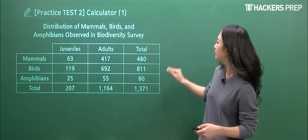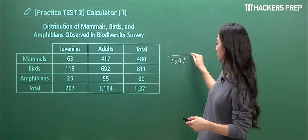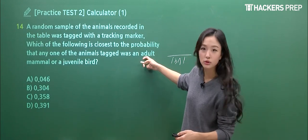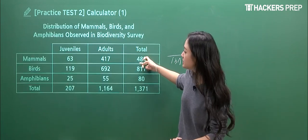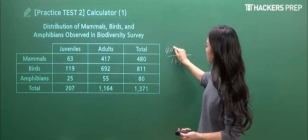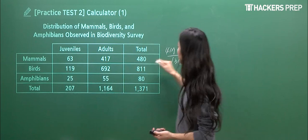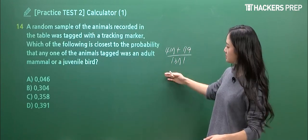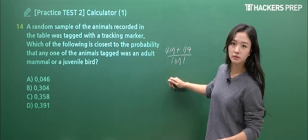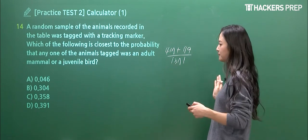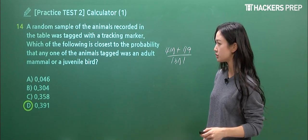So what's going to be the denominator? 1,371. And the specific category that we're interested in is going to be adult mammal. So how many are there? Adult mammals are 417. And what was the second one? Juvenile bird is going to be 119. So at the end, that's the fraction form that we need to simplify. Can you guys plug this into your calculator? And what do you guys get? Approximation of D, and that's your match.